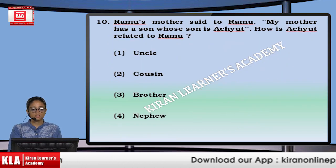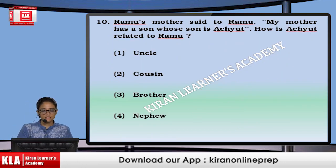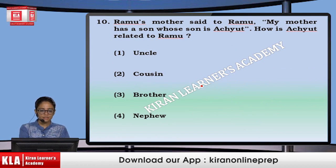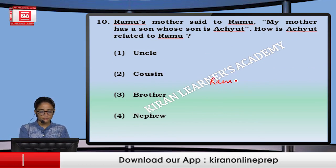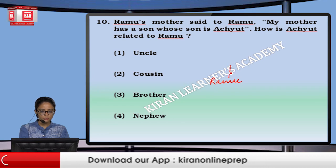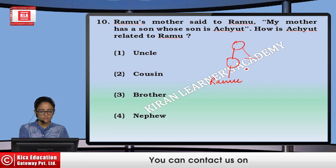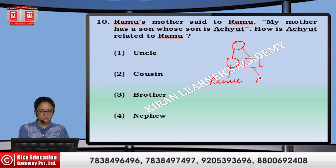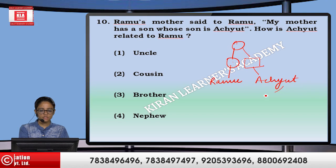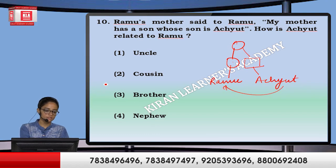Next: Ramu's mother said to Ramu — my mother has a son whose son is Achut. How is Achut related to Ramu? That means cousin.